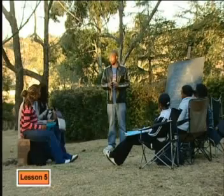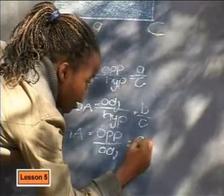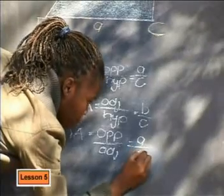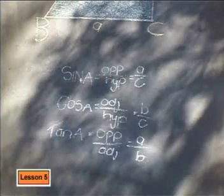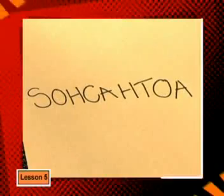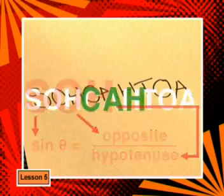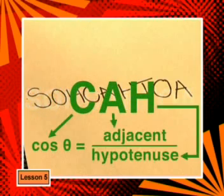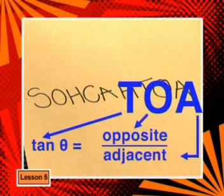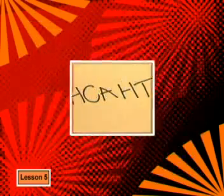Before I give you your challenges for today, I want to check how much you can remember of what we've done. We started by using the trig that you already knew, SOHCAHTOA. Who can tell me what this stands for? SOHCAHTOA is a way to remember that sine of an angle is the opposite side divided by the hypotenuse, cosine is adjacent divided by hypotenuse, and tangent is the opposite side divided by adjacent.